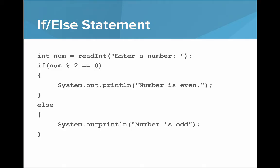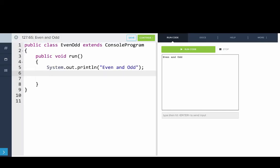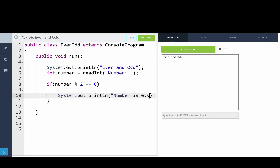So let's go look at this one in our code editor. Okay, so let's ask the user for a number. Int number equals readInt, and we'll ask them for a number. And then we'll say if number mod two equals equals zero, then we'll print line, number is even.